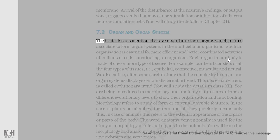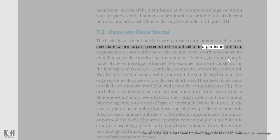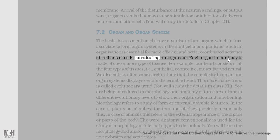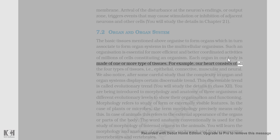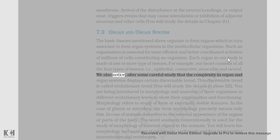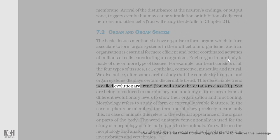The basic tissues mentioned above organize to form organs, which in turn associate to form organ systems in multicellular organisms. Such an organization is essential for more efficient and better coordinated activities of millions of cells constituting an organism. Each organ in our body is made of one or more types of tissues. For example, our heart consists of all four types of tissues: epithelial, connective, muscular, and neural. The complexity in organ and organ systems displays a certain discernible trend called evolutionary trend.